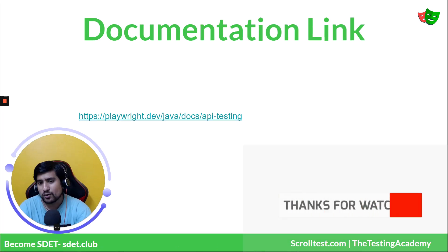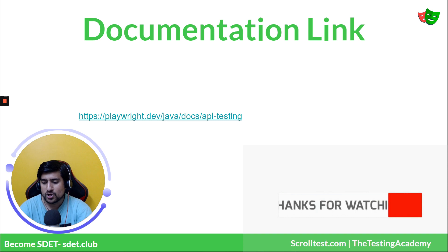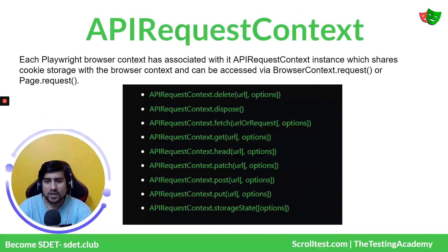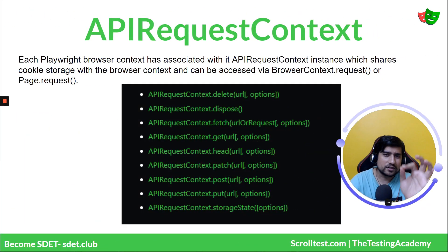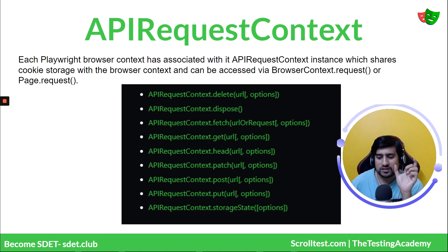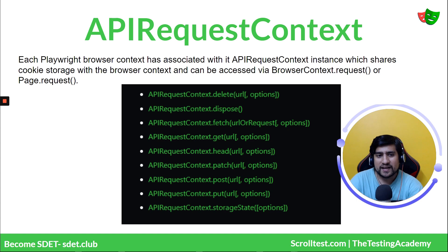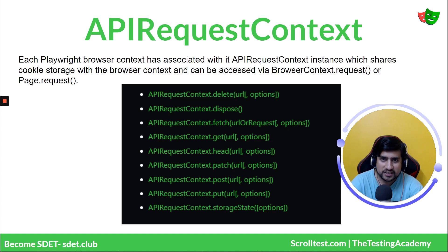All documentation links are available and you will find the generated code in the description as well. First, let me give you a small concept: how you can leverage the API Request Context in Playwright. In Playwright, each browser context has an associated API Request Context.